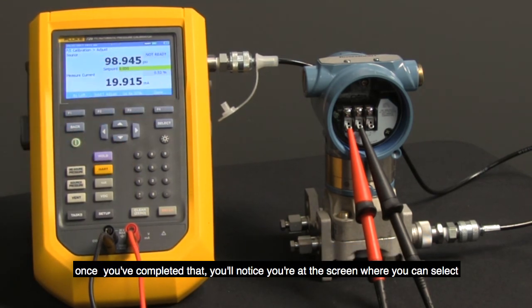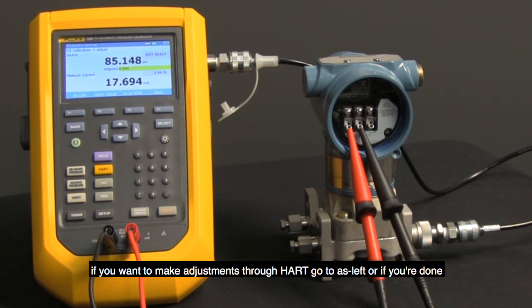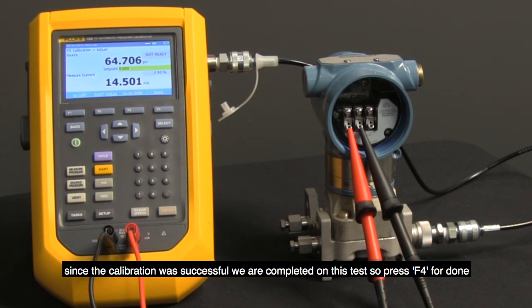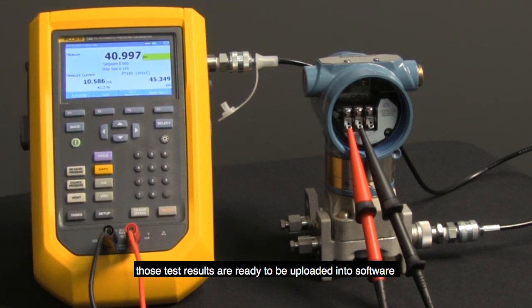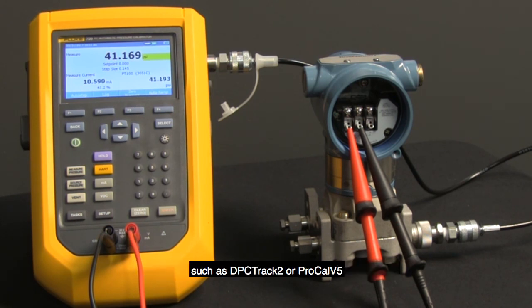Once you've completed that, you'll notice you're at the screen where you can select if you want to make adjustments through HART, go to as left, or if you're done. Since the calibration was successful, we are completed on this test. So we'll press F4 for done. And those test results are now ready to be uploaded into software such as DPC Track 2 or ProCal V5.